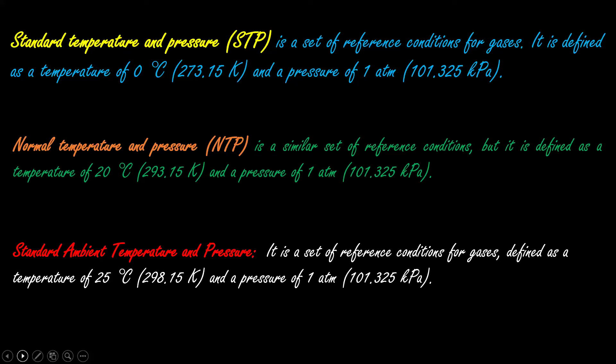We use all these conditions in different cases. For example, STP means standard temperature and pressure. We use these conditions in different environmental chemistry problems — like when we want to calculate the volume of a gas, or the number of moles present in a gas, or temperature or pressure. To use this, we must remember our ideal gas law.